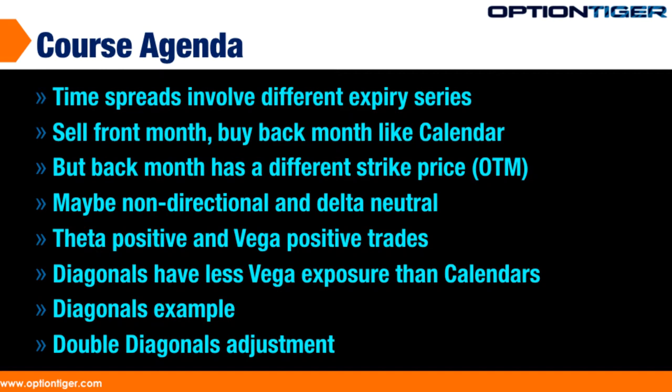What that does for us is a little subtle and you will understand it more when we go into the trading platform. Because we are buying an out of the money put in the back month, you could be non-directional when you start — you may or may not be delta neutral. There are ways to construct it as delta neutral as possible, but you will still end up having some sort of a delta bias.